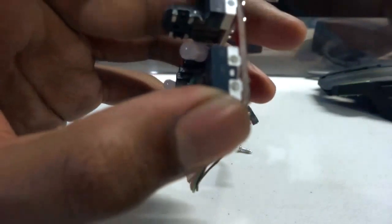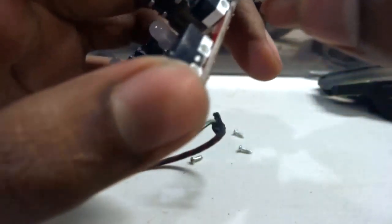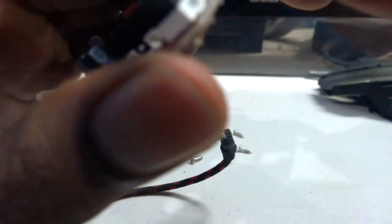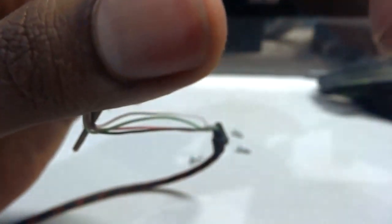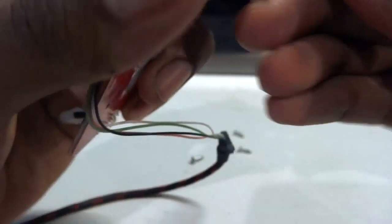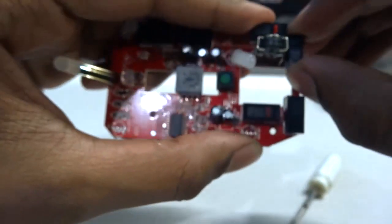Take your screwdriver, put it under this tab and kind of lift this tab out carefully. Don't break this housing, you just want to lift it out carefully. So once you get that tab lifted, and it might take a little bit of prying, it's okay. Once it's lifted off a little bit like that, you want to pull it off.